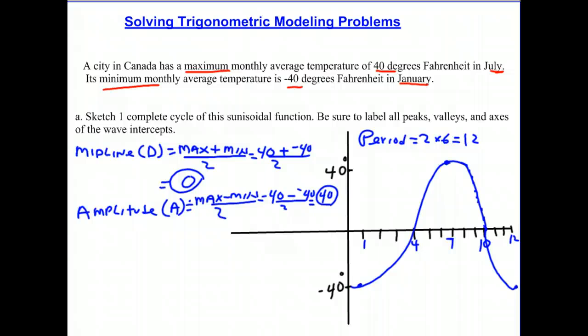The period was 12, which breaks up into increments of 3 each. Every time you have a period, you divide it by 4, which gives you the increments where it will hit a maximum point, back to the midline, back to a minimum point, and then back to the midline.